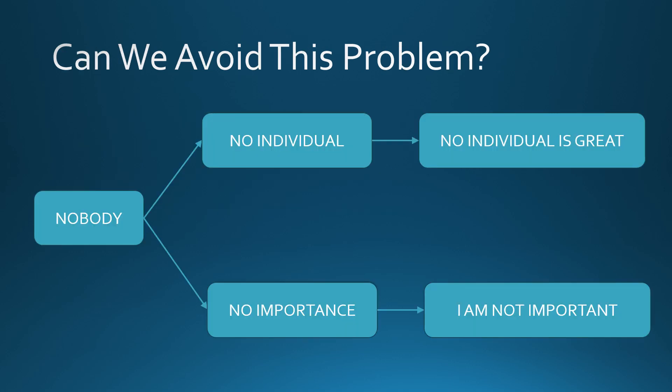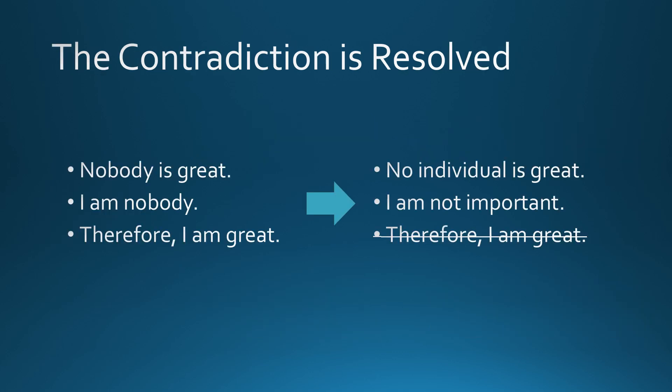To avoid the above problem, one might say that we must substitute the word 'nobody' with the terms 'no individual' and 'no importance,' because the substitution clarifies the meaning of the word 'nobody.' In the process, however, we are replacing a shorter word — 'nobody' — with a longer term such as 'no individual' or 'no importance.' After the substitution we get two different sentences: 'no individual is great' and 'I am not important.' With this substitution, the original contradiction disappears because we are no longer using the same word.